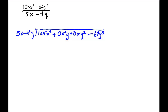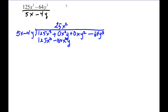Now we go through the division. 5x goes into 125x cubed 25x squared times. So we write 25x squared there, then do our multiplication: 25x squared times 5x is 125x cubed, and 25x squared times negative 4y is minus 100x squared y. You can see how the placeholders match up and align with like terms. We subtract, and this becomes 100x squared y.